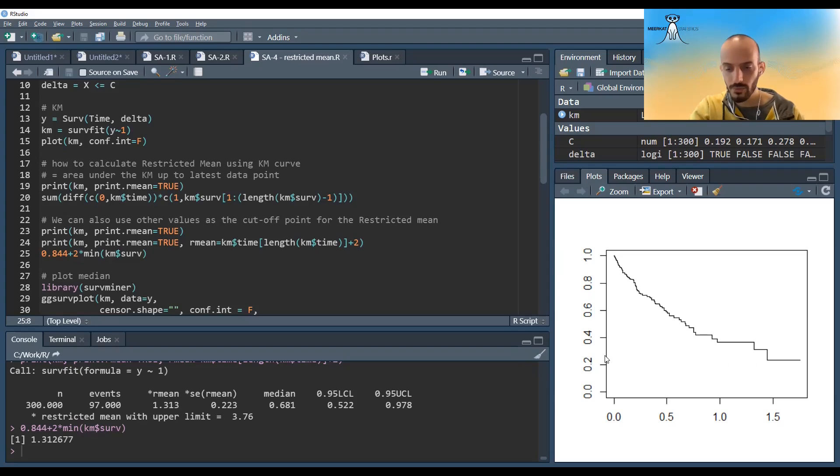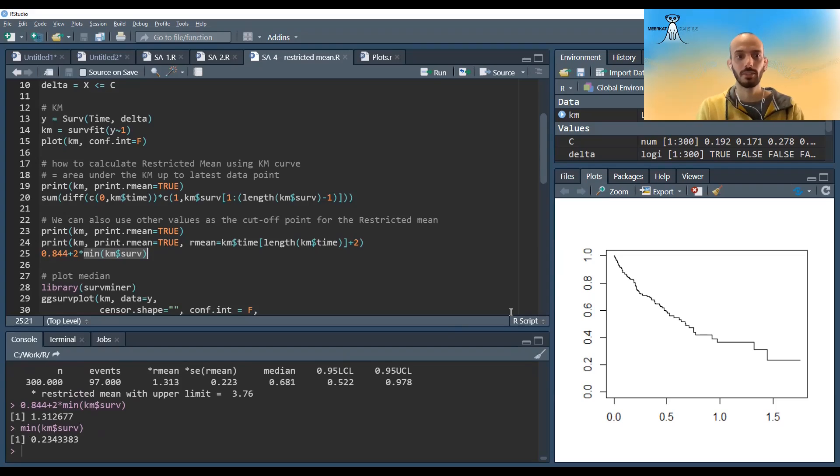As if I would take the previous one and just add two times this value over here. So this value over here is 0.234. And so if we just take two times that, it just adds it to the restricted mean. So we see that the default for Kaplan-Meier is that if we take a restricted value that is above the last point, it just thinks it's a straight line and just continues it as a straight line.